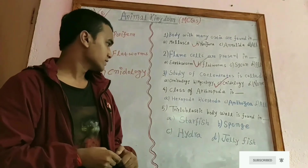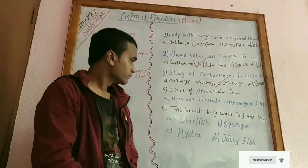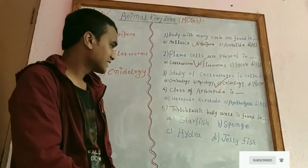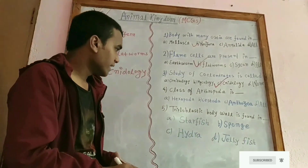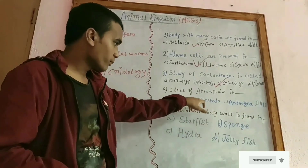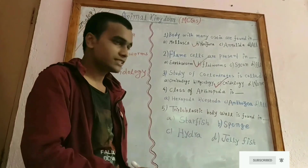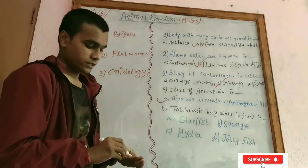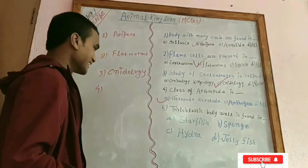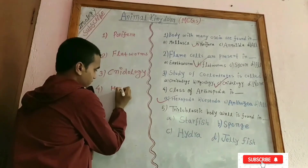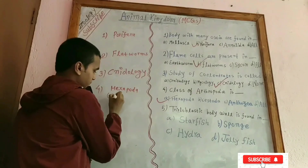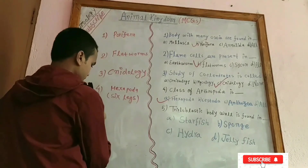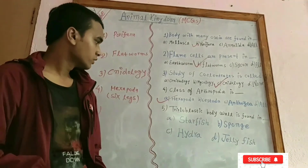In question number 4, the classes of arthropods include insects. In phylum Arthropoda they represent billions of insects. Cestoda is a class of Platyhelminthes, and Anthozoa is a class of Cnidaria. Therefore the answer is Hexapoda, in which insects have six legs.